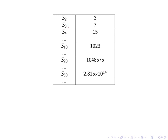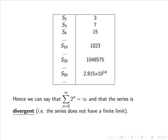Here we can see that as n gets larger, the sum keeps on getting larger and larger. In fact, the sum from 0 to infinity of 2ⁿ is infinity, and here we say that the series is divergent, i.e. the series does not have a finite limit.